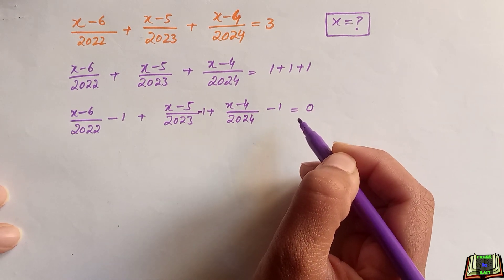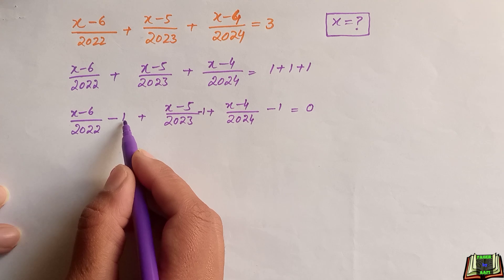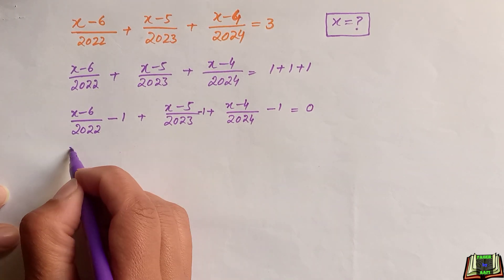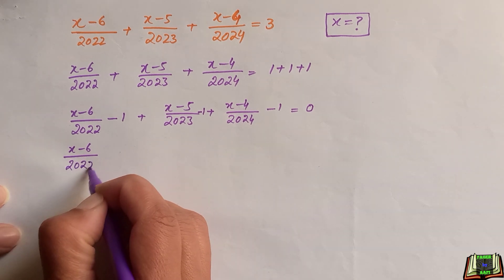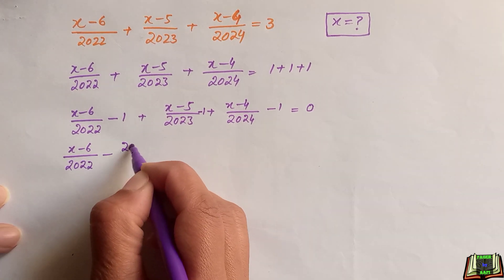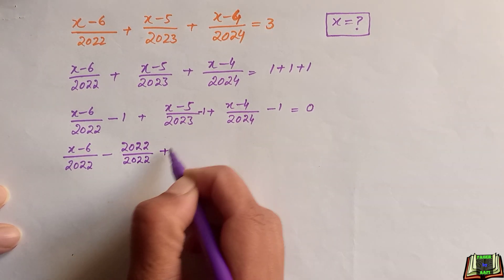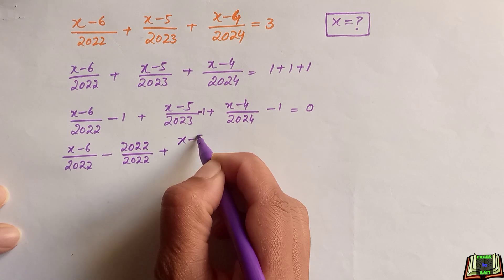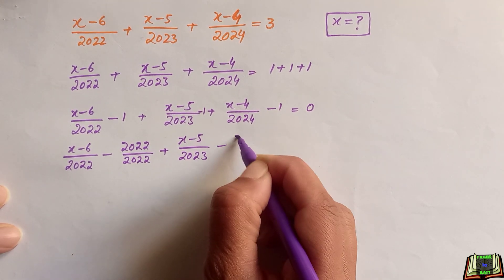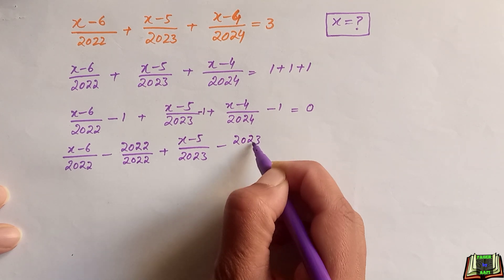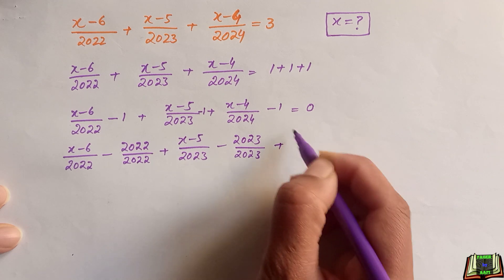In the next step, we are going to replace each 1 with its equivalent fraction: (x minus 6) divided by 2022 minus 2022 divided by 2022, plus (x minus 5) divided by 2023 minus 2023 divided by 2023.